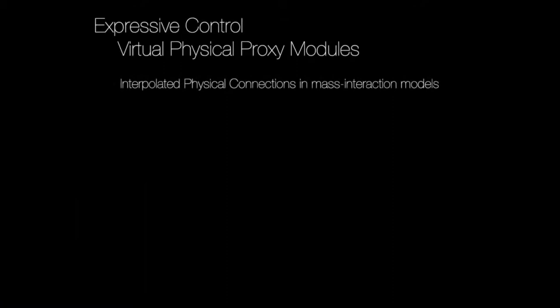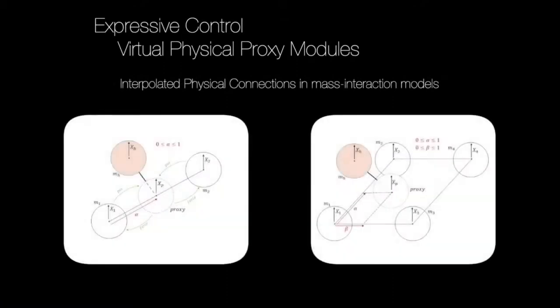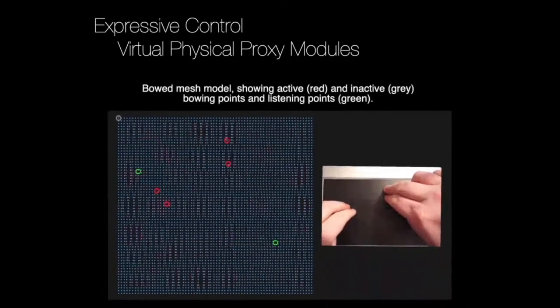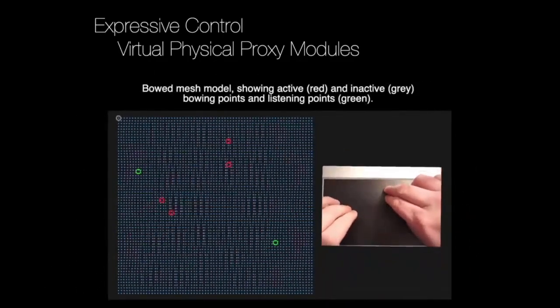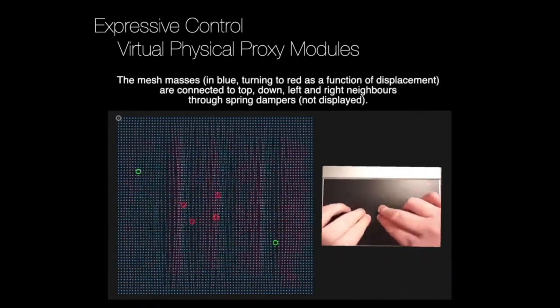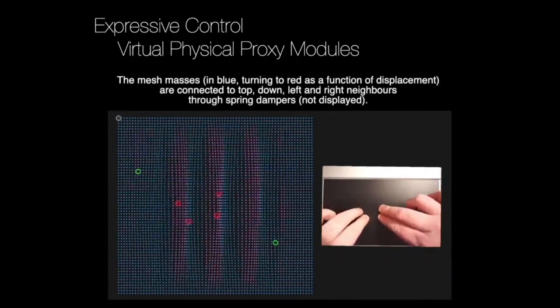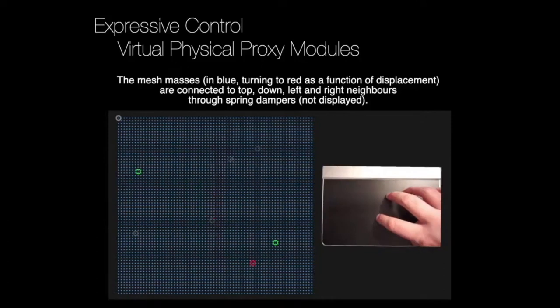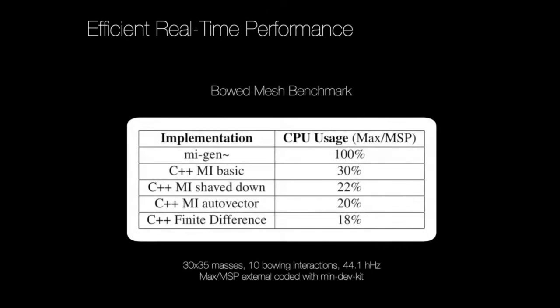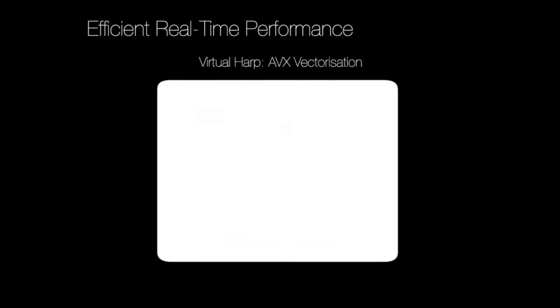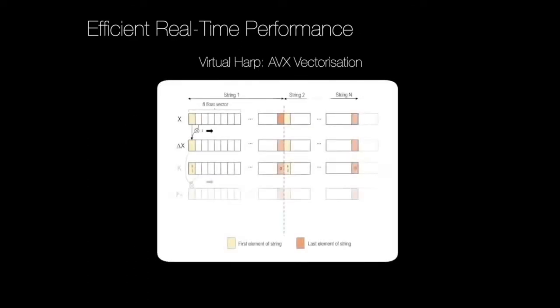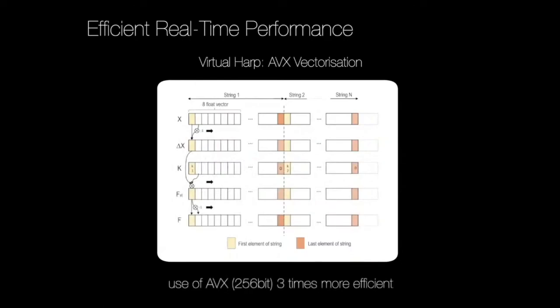The proxy module allows smoothly interpolating topological connection points on regularly disposed matter such as discrete strings or meshes. This enables changes in the location of coupling points between structures inside a model, such as excitation points or contact points, giving a much larger expressive palette to design models. Regarding real-time performance, we offer a benchmark of various mass interaction implementations in C++, comparing them in some cases to finite difference schemes. In cases where efficiency is crucial, we may also benefit from manual AVX vectorization, which speeds things up.